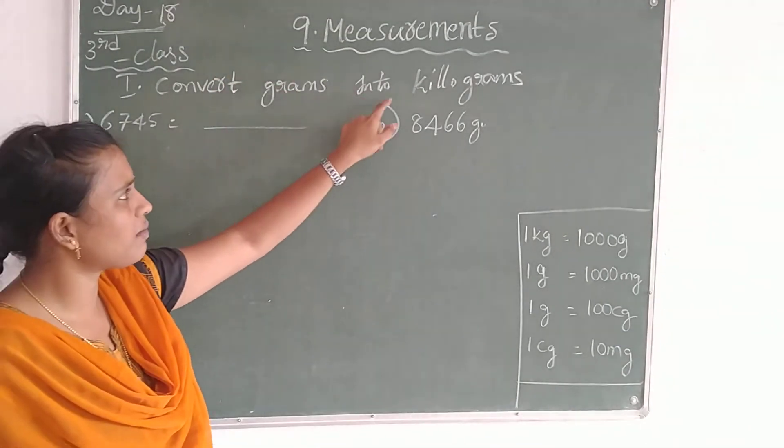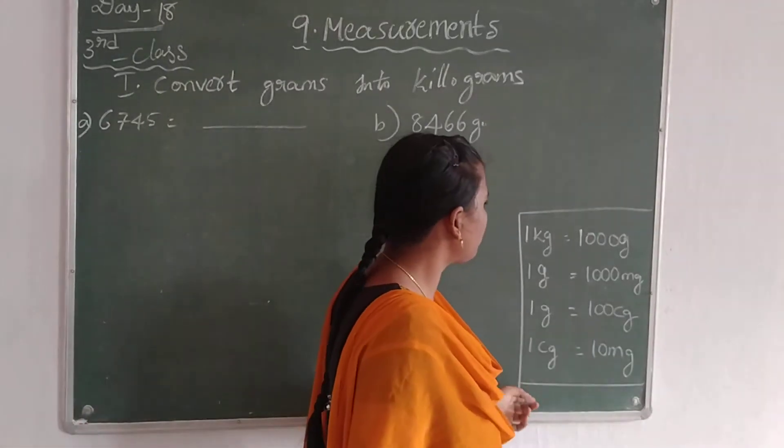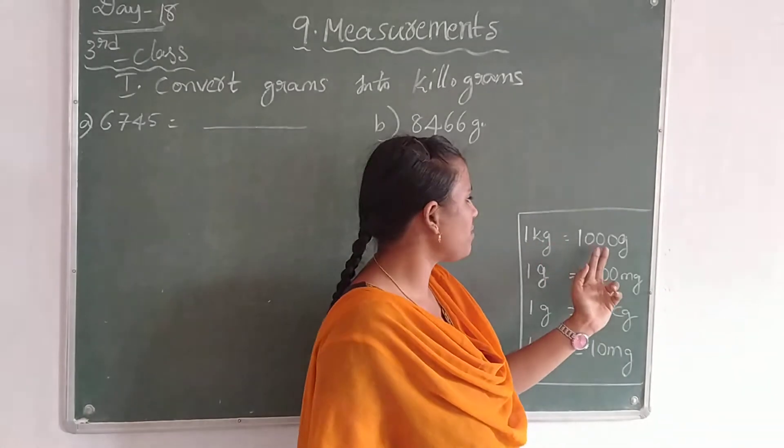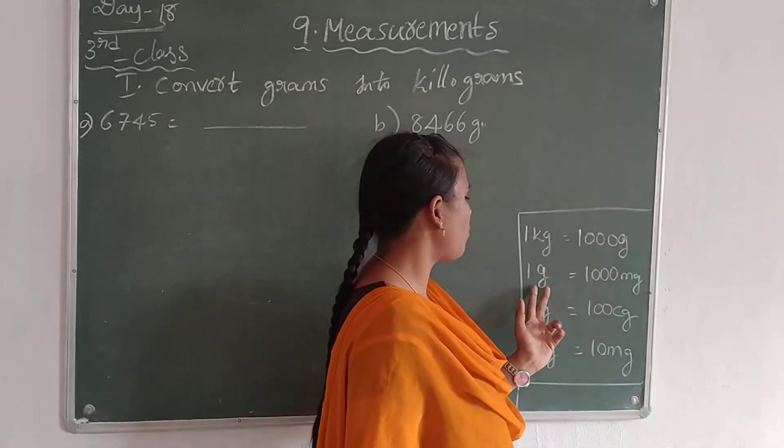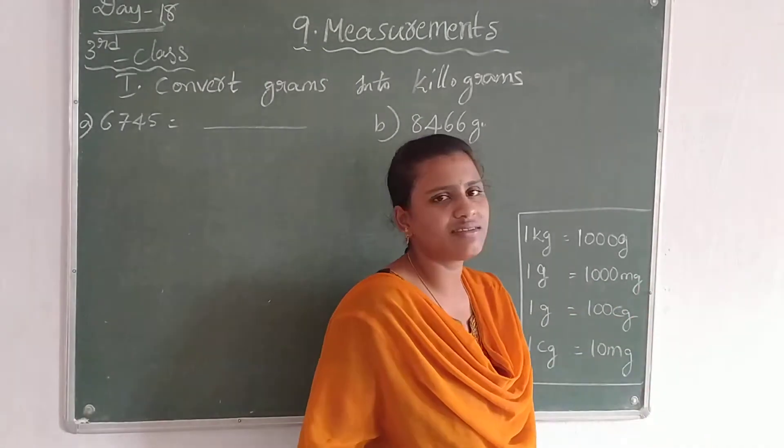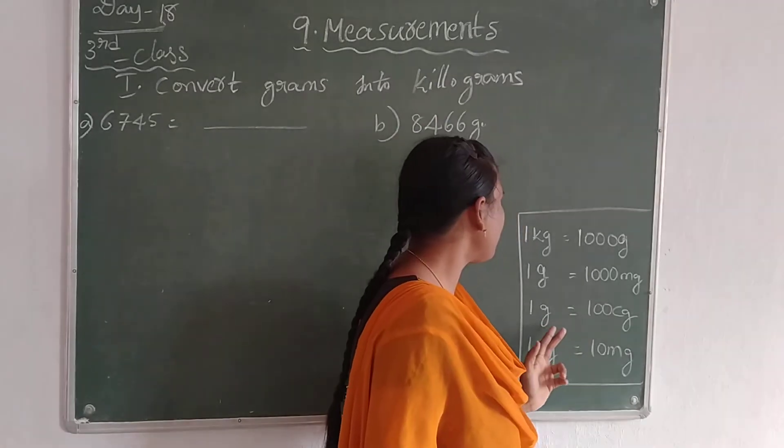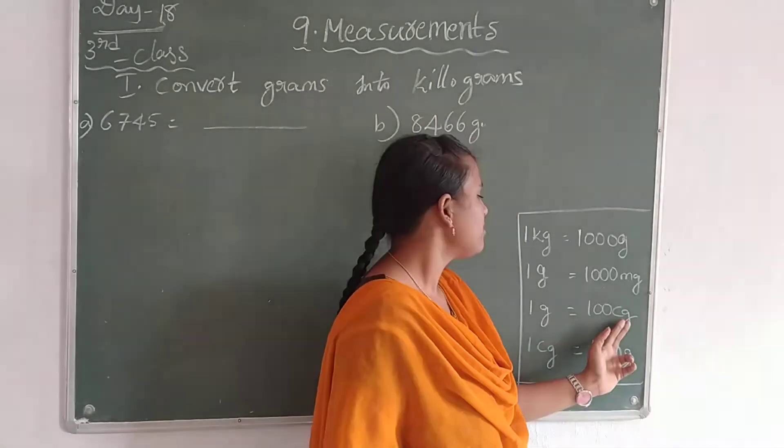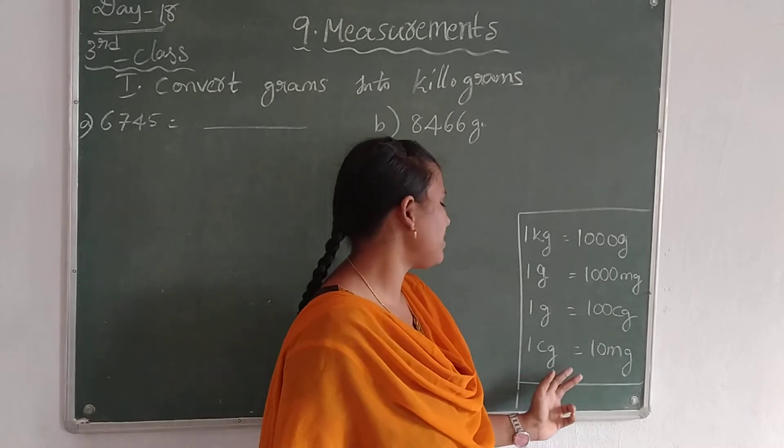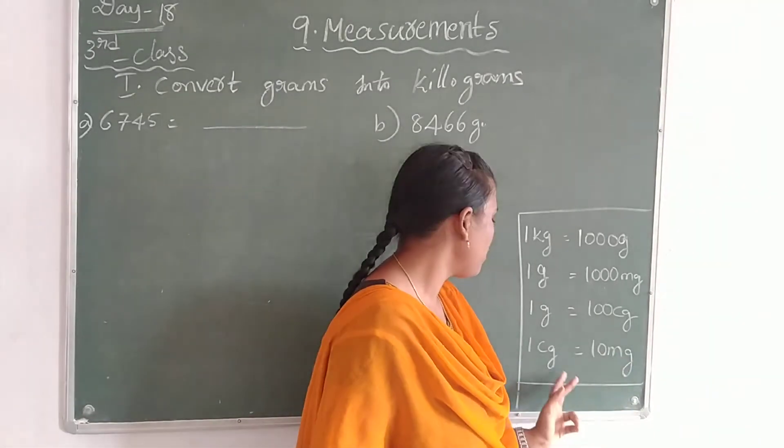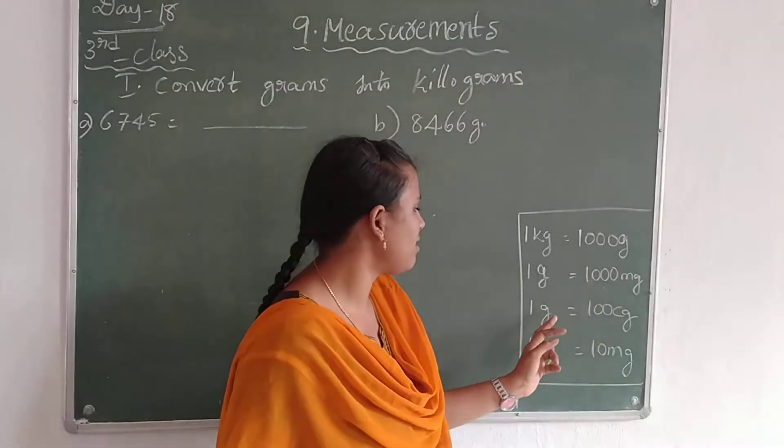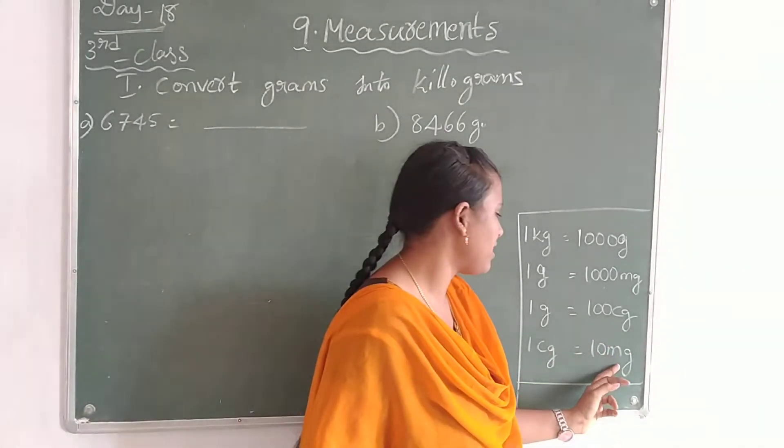The topic is converting grams into kilograms. See this box. 1 kg, which means 1 kilogram, equals 1000 grams. 1 gram means 1000 mg, milligrams. 1 gram equals 100 cg, centigram. 1 centigram equals 10 mg. You have to note down this and practice this also.